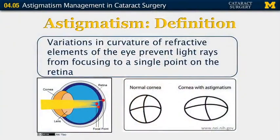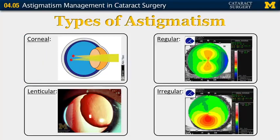We'll start off by defining astigmatism, which is the variation in curvature of the refractive elements of the eye that prevent light rays from focusing to a single point on the retina. There are various types of astigmatism. There can be astigmatism that comes from the cornea itself, with irregularities leading to light being focused at different points on the retina. Astigmatism can also come from the lens itself — if the lens is off-kilter, you can get an extreme form of astigmatism, and smaller amounts of lens irregularities can also lead to astigmatism.